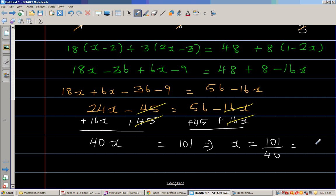So writing this as a mixed number, 40 goes in 101 two times and then you've got 21. So this is 2 and 21 over 40. So this is the final answer. If you want to write this as a decimal,